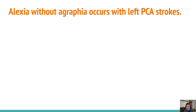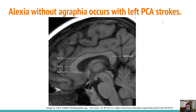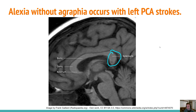Alexia without agraphia means the inability to read without an inability to write. This is going to occur with left PCA strokes — recall PCA stands for Posterior Cerebral Artery. It's not just any PCA stroke; it has to be the left side and also has to include the posterior portion of the corpus callosum, the splenium. Just to give landmarks: here's the cerebellum, here's the big belly of the pons, and splenium means something like bandage in Greek. So a left PCA stroke involving the splenium can give us alexia without agraphia.